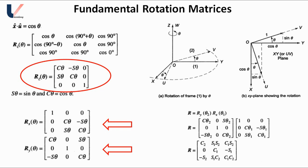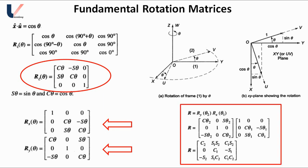When there is a sequence of rotations — for example, rotation about the X-axis followed by rotation about the Y-axis — this is given by Ry multiplied by Rx. This cannot be Rx times Ry, as it will generate a different result. The order is very important: write the first rotation on the very right-hand side and the last rotation on the left side. That was all for this lecture.